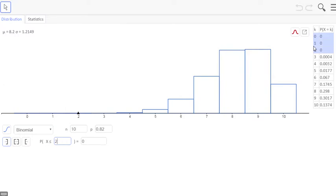And then in part D, where it asks for the expected number and the standard deviation, GeoGebra actually calculates this for you right up here in this upper left-hand corner. There's our mean of 8.2 and the standard deviation of 1.21. So while we can calculate these by hand, GeoGebra does a nice job of calculating it for you, and you're welcome to use this technology.